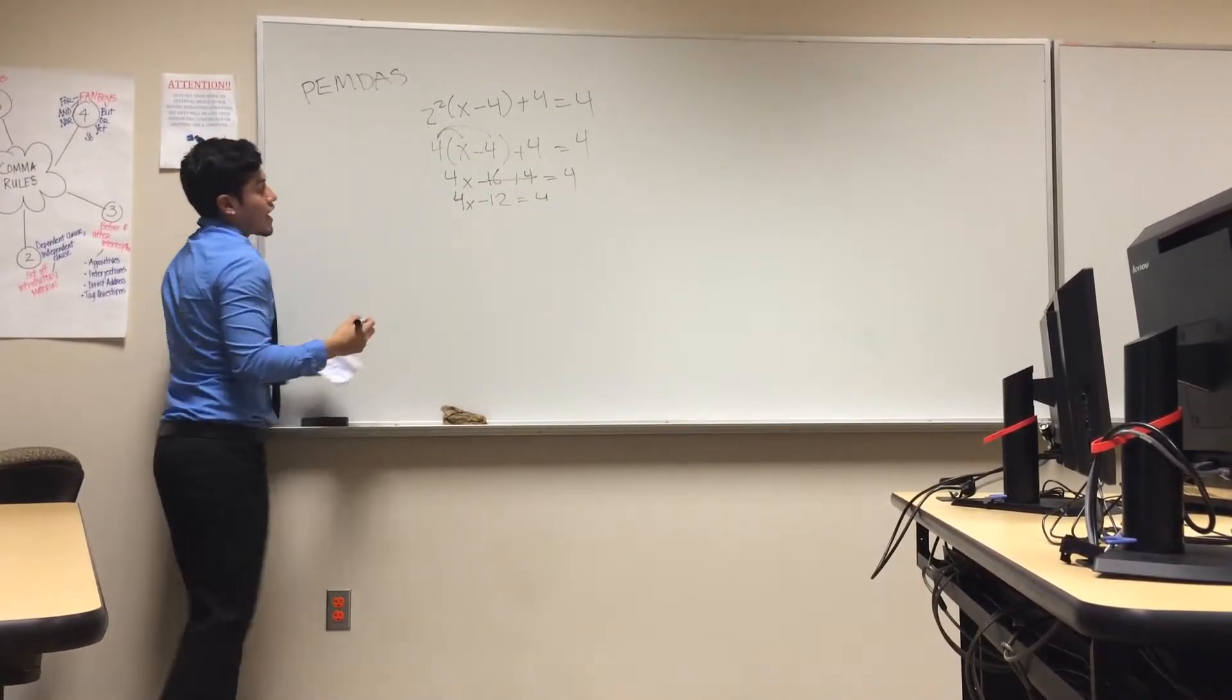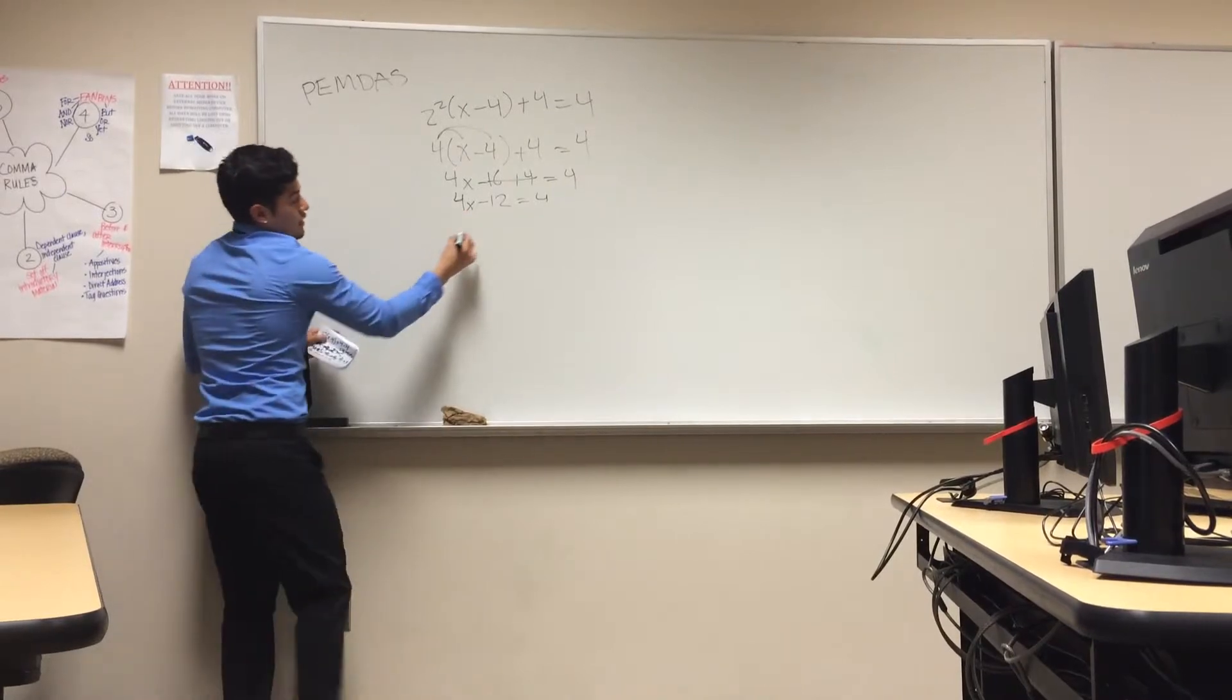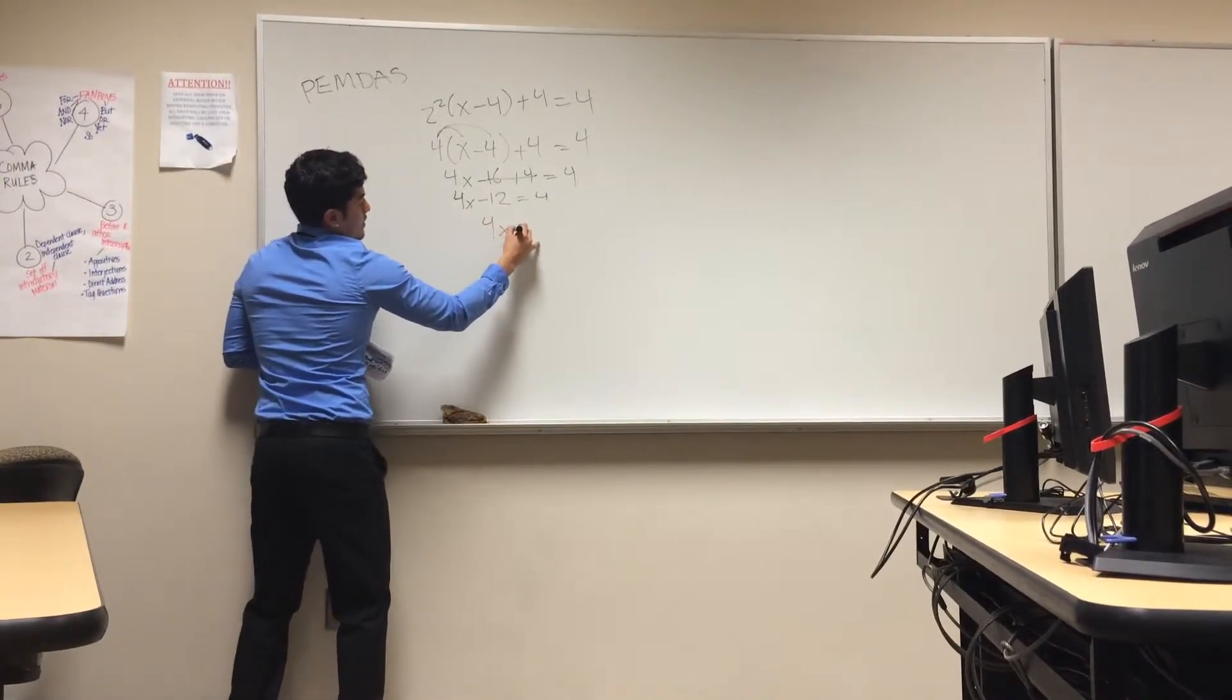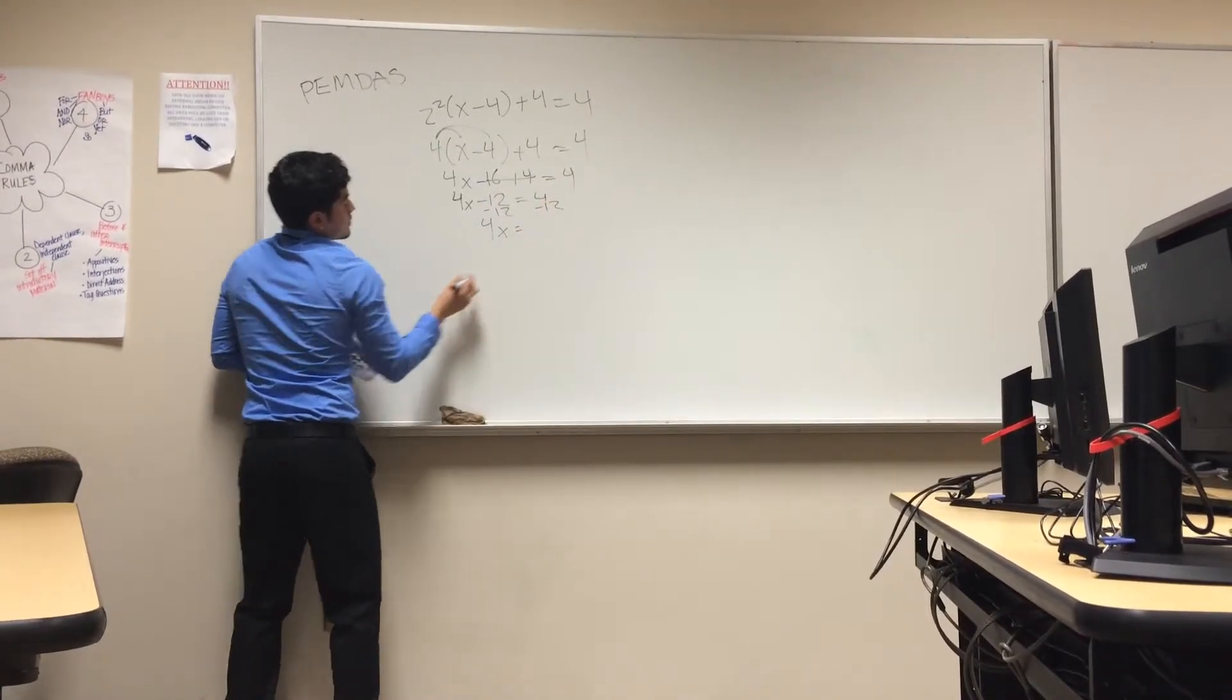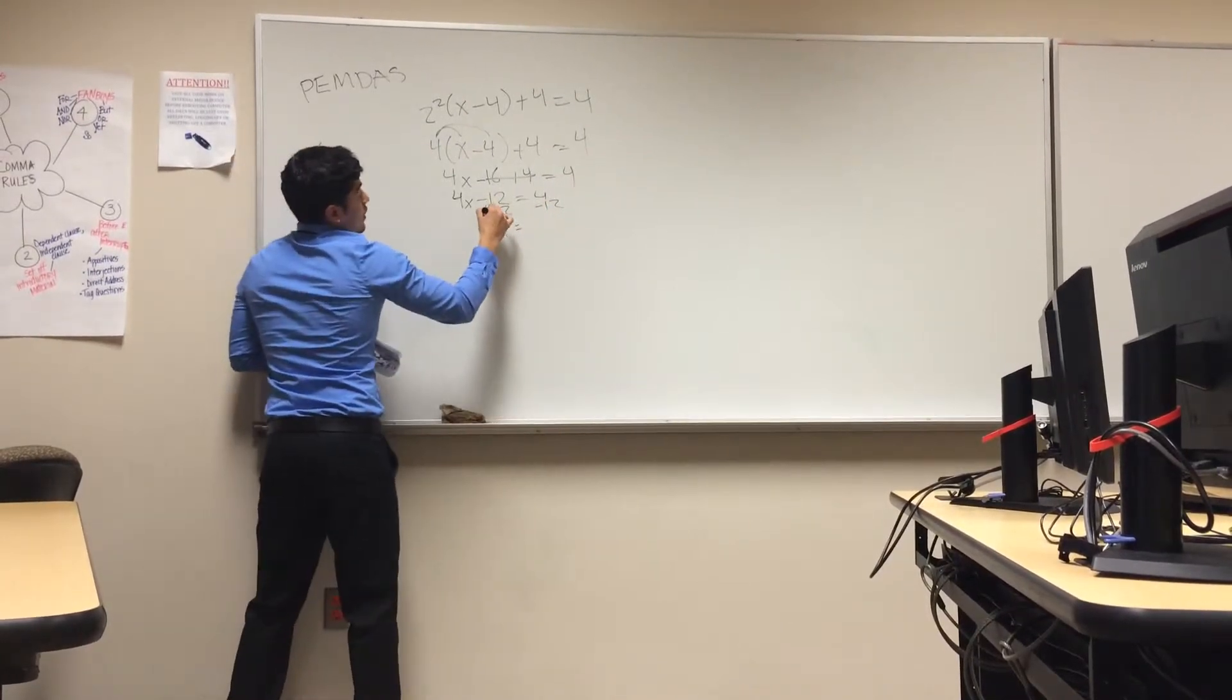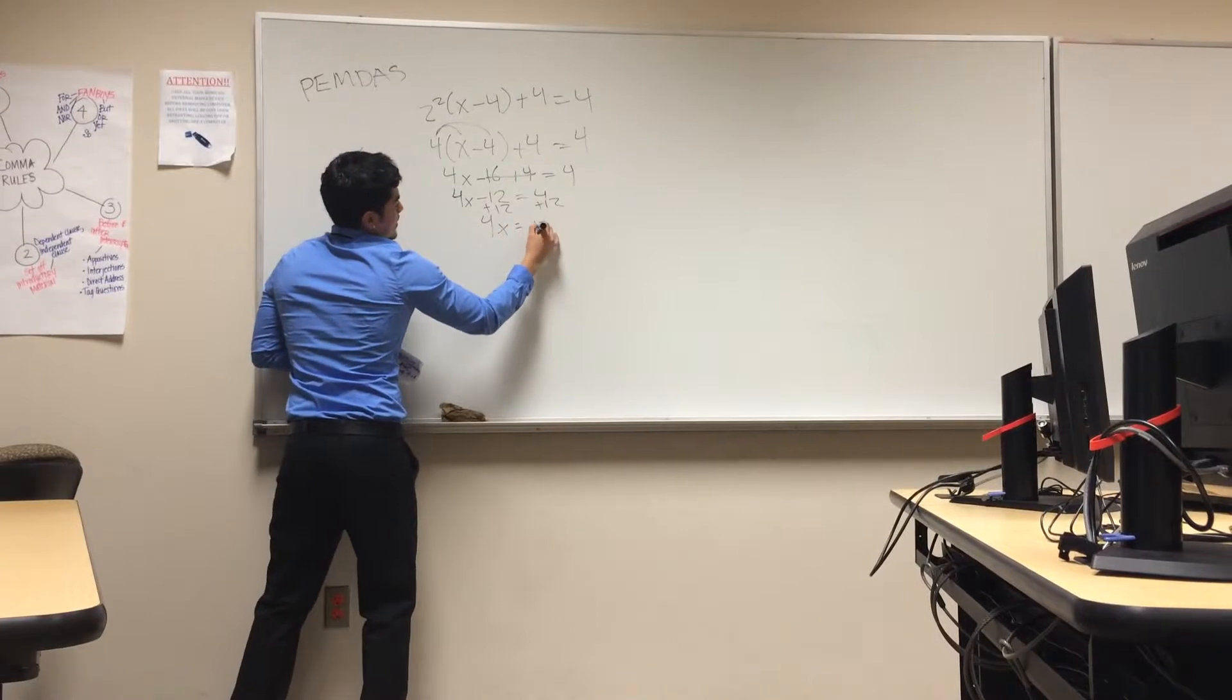Now, you have to isolate the x. So, 4x minus 12 plus 12 on both sides equals 16.